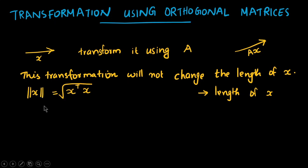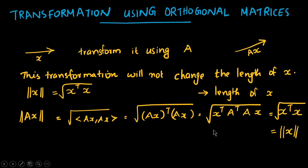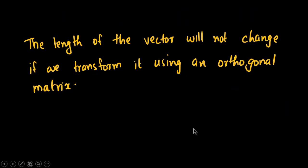To show this, the norm of x equals root of x transpose x. Similarly, the norm of Ax equals root of the inner product of Ax with Ax, which is root of (Ax) transpose times Ax. Expanding, this becomes root of x transpose A transpose A x. Since A transpose A equals the identity matrix, this reduces to root of x transpose x, which is the norm of x. Therefore, norm of Ax equals norm of x.